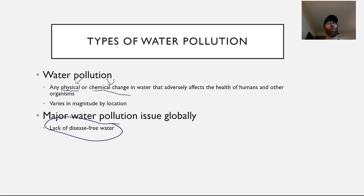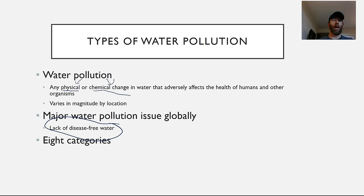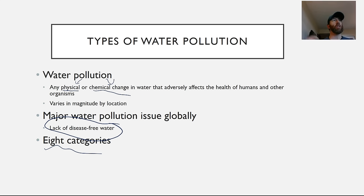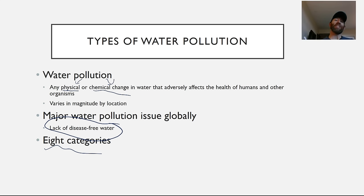The major water quality issue globally right now is access to disease-free water — the number one issue people face with water quality is that a lot of water has nasty critters in it. Not as big of an issue in the US, but particularly in the developing world. We are going to split our types of water pollution into eight main categories; some of those categories actually cause the same thing to happen, a lot of it dealing with eutrophication, but we will talk about each category separately.